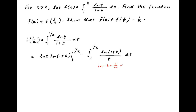To evaluate the integral on the right-hand side, put t = 1/u. Therefore dt = −1/u² du. When t equals the lower limit 1, u equals 1. And when t equals the upper limit 1/x, u equals x.